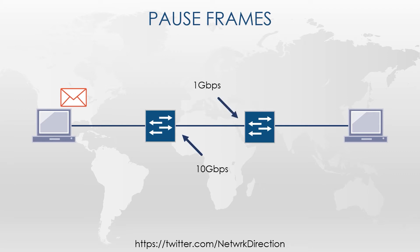This might happen if there are devices of different speeds on the network — a high-speed device can easily overwhelm a low-speed device. Practically though, this is common in switches themselves, where they might have many devices sending traffic and can't forward it out fast enough.